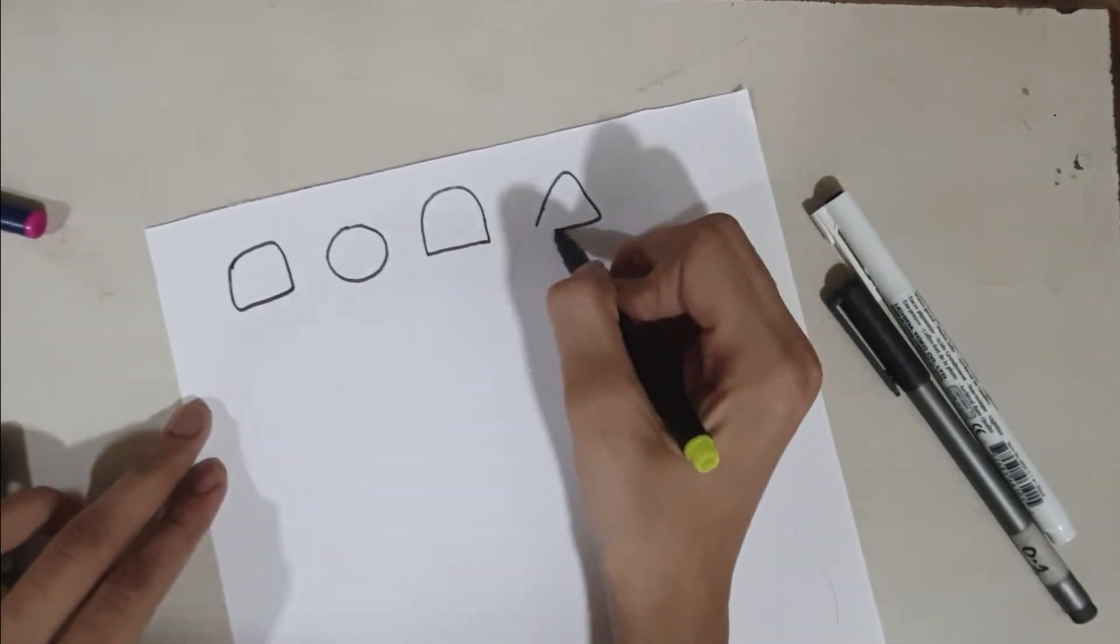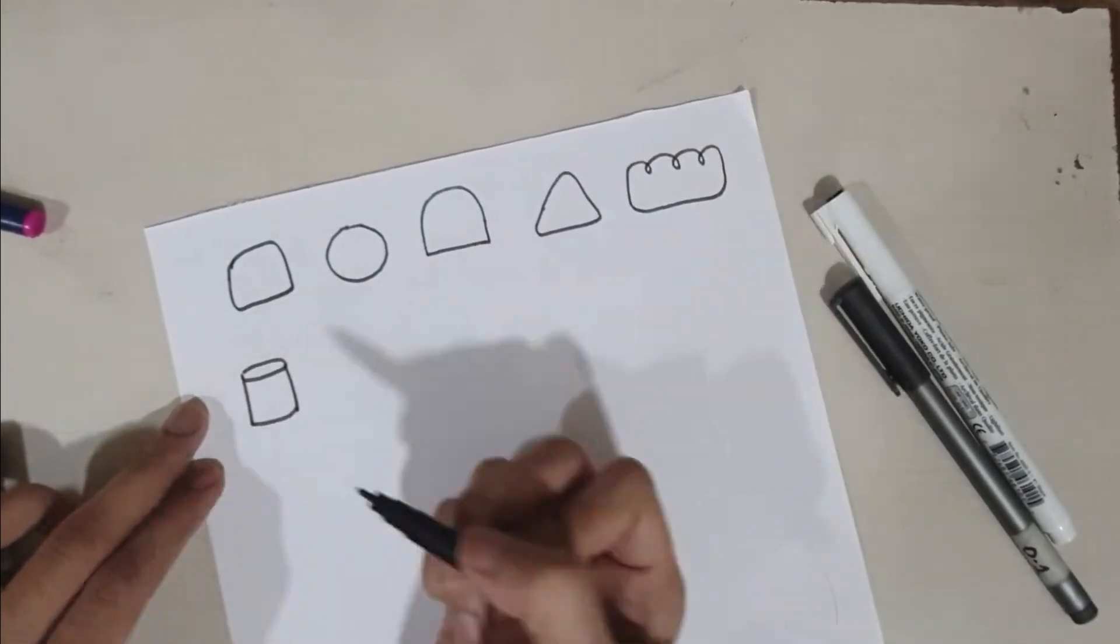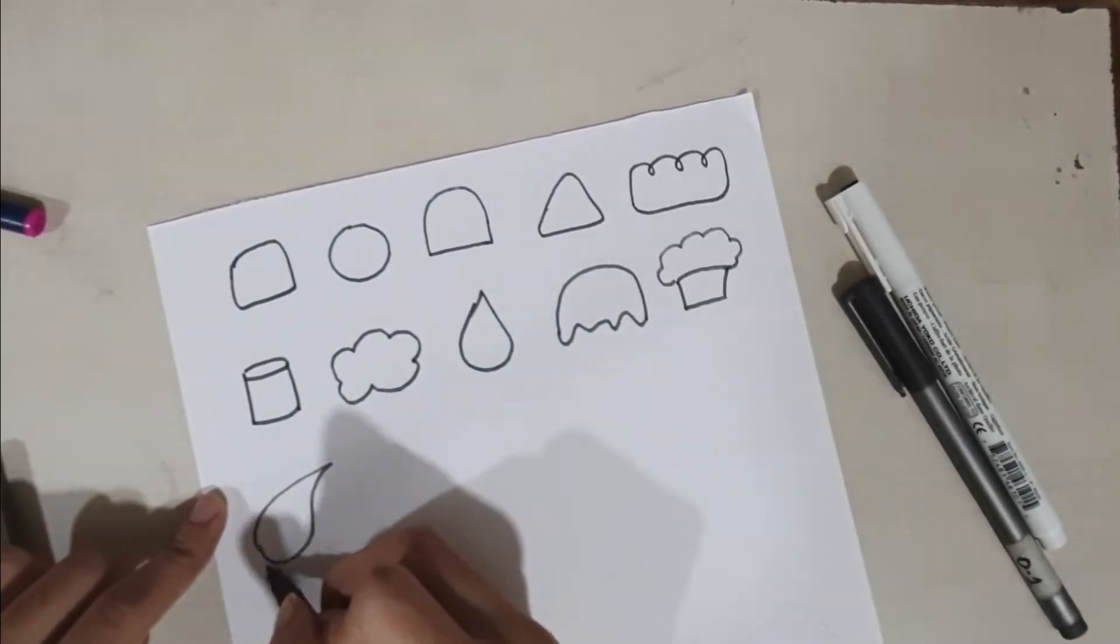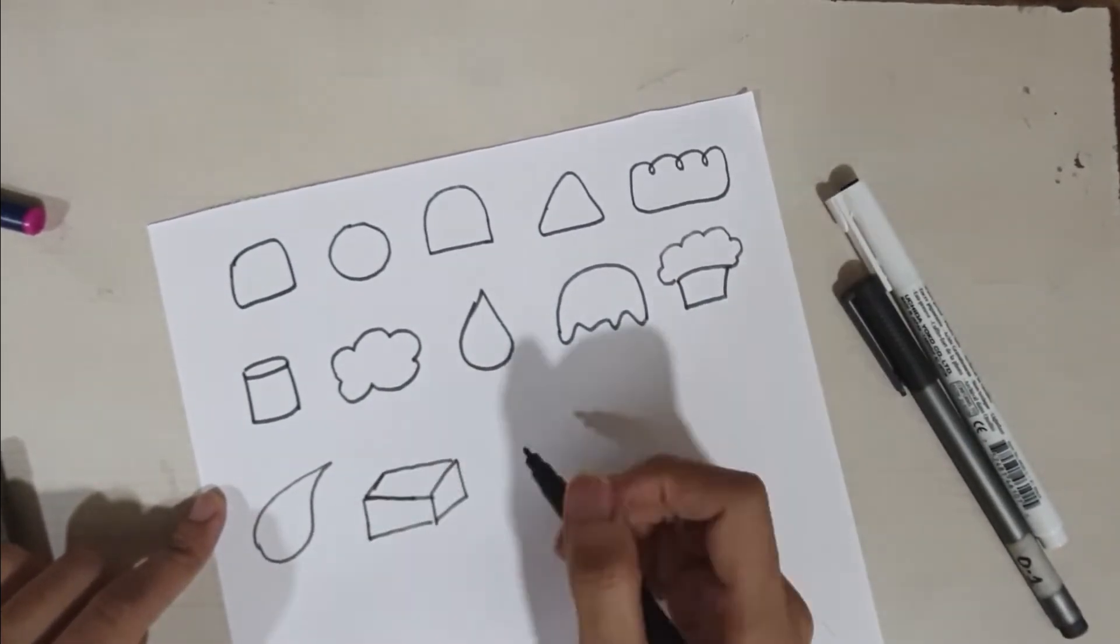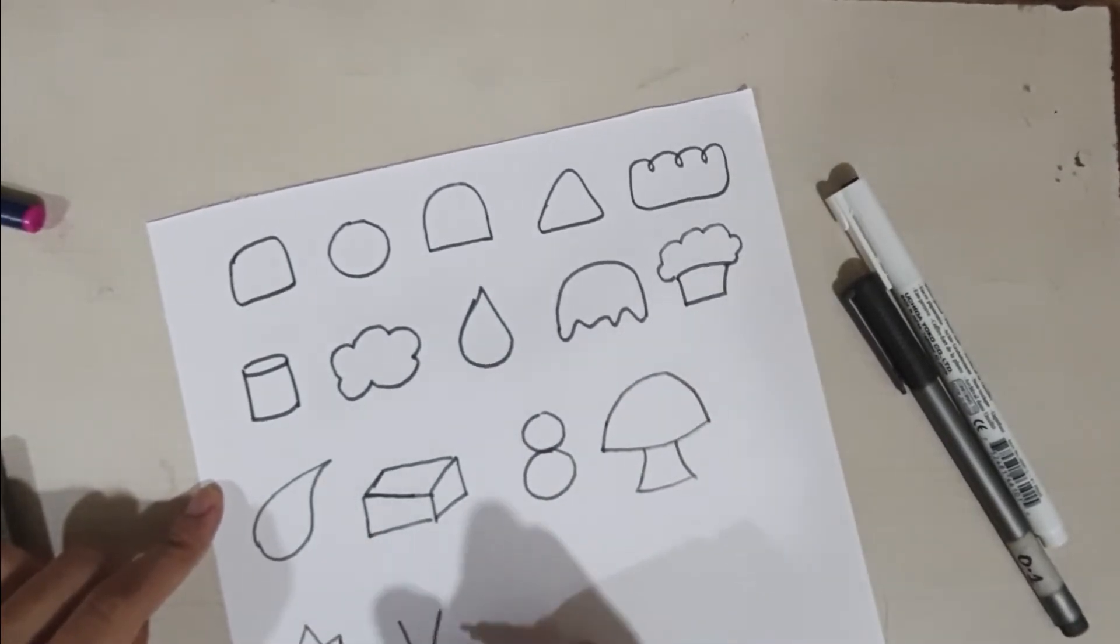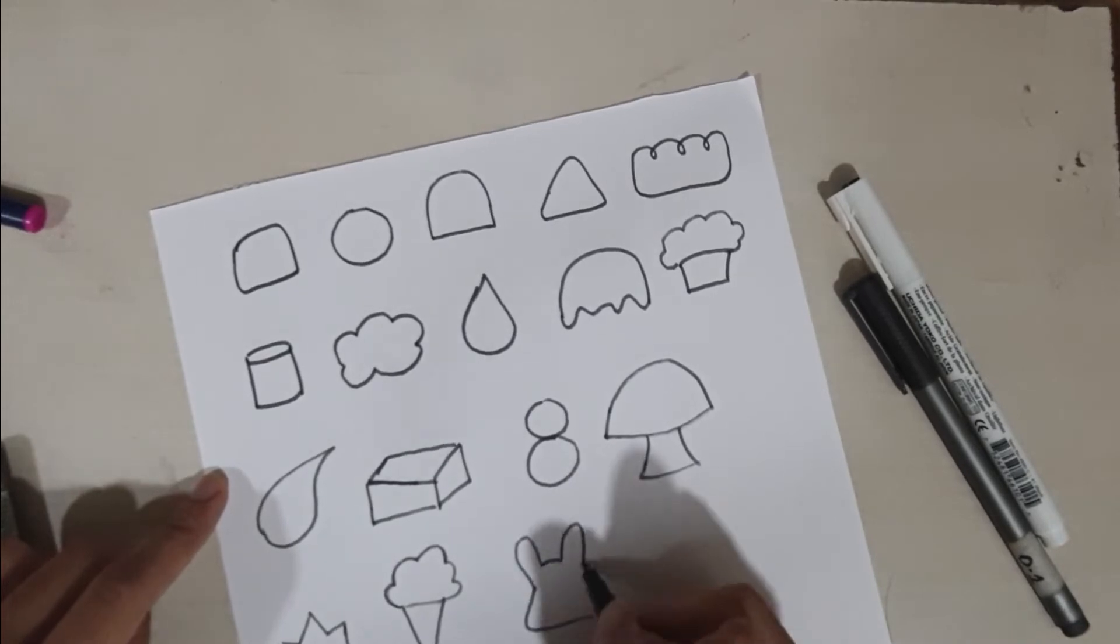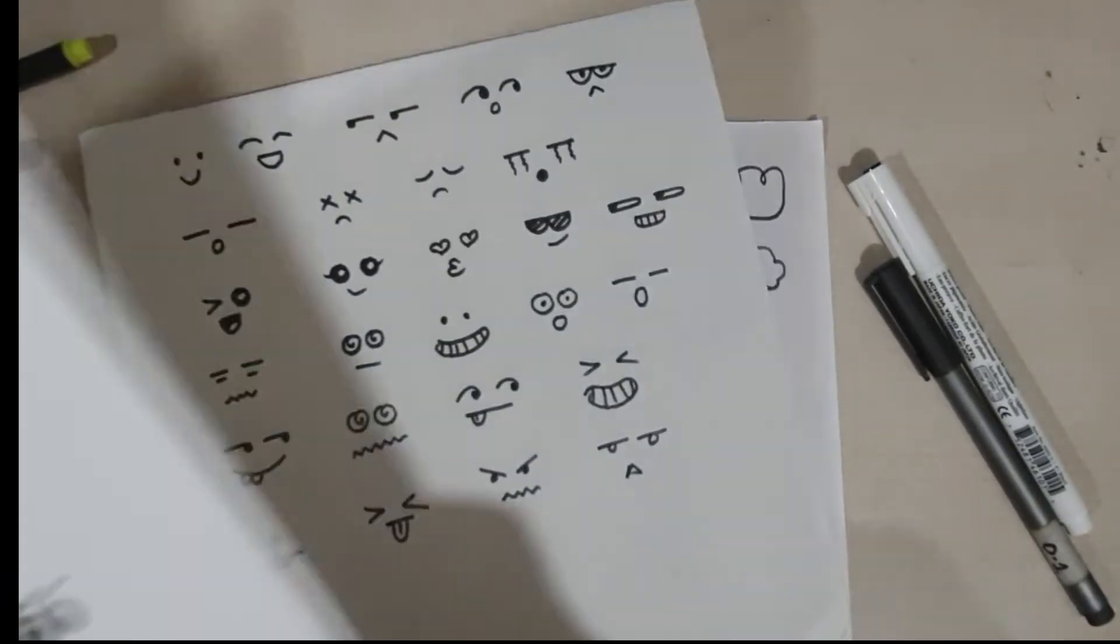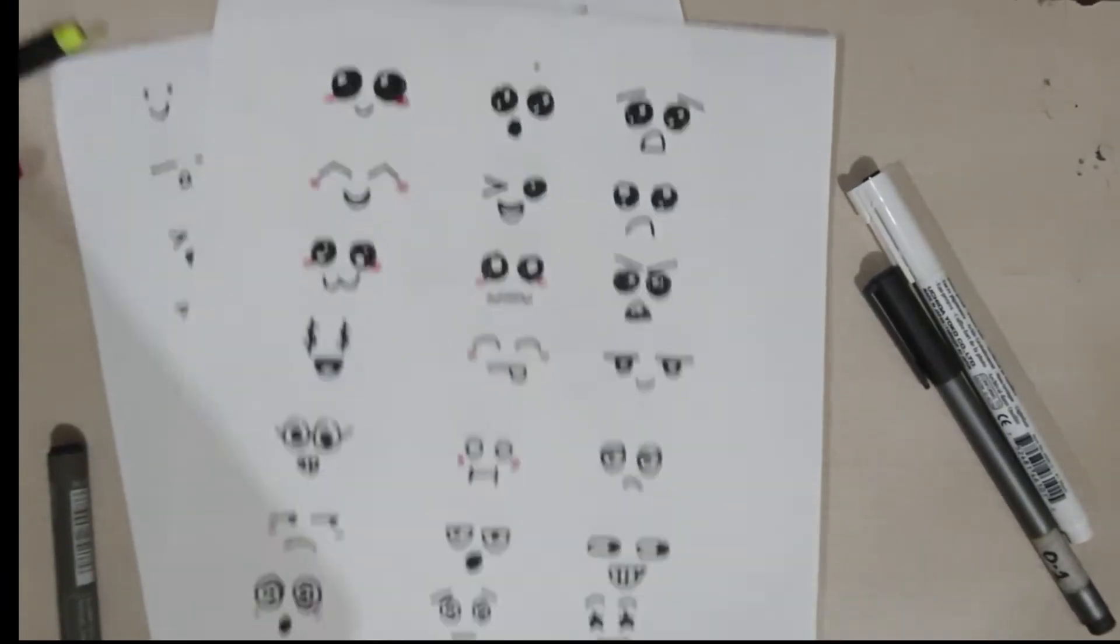Now that we have an idea about expressions, let's try some shapes, basic shapes which you can incorporate into your doodle and make it look good. Now that we have a collection of different shapes and expressions, let's try to create a doodling art with it.